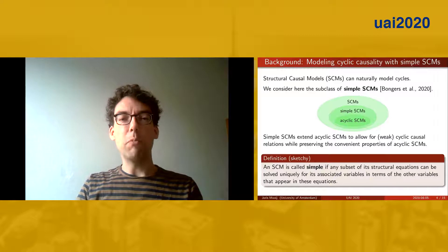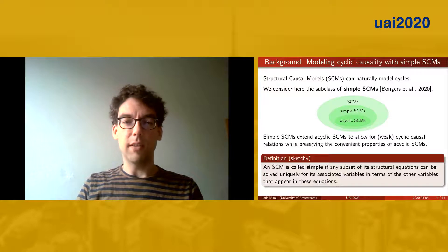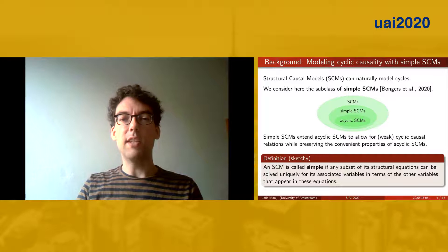First, some background. How do we model cyclic causality? Here, we use structural causal models because they can naturally model cycles. In particular, we use the subclass of simple SCMs that was recently introduced.